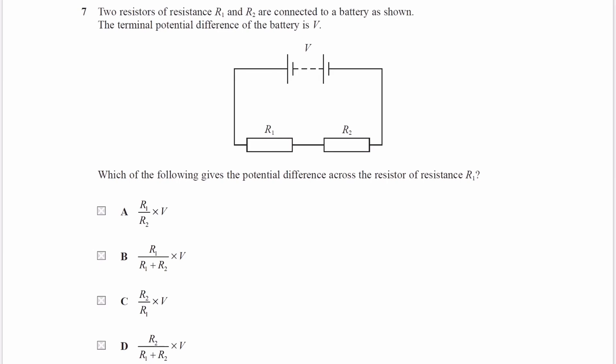Okay, so basically the voltage that is given to these two resistors is V. And we're trying to work out the potential difference across the resistor R1.